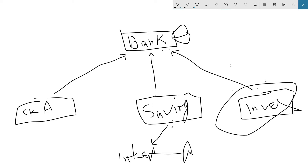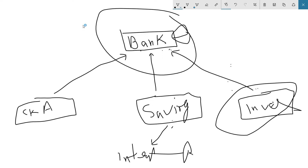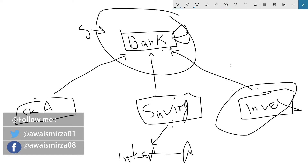I can define a more specialized version of the withdrawal method just for the investment class — that is called overriding the method of the superclass. The bank class already has a withdrawal method, but the investment class needs different behavior, so I write a special withdraw method that overrides the bank class's method.